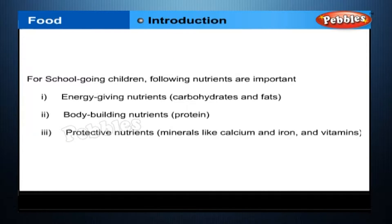For school-going children, the following nutrients are important: energy-giving nutrients — carbohydrates and fats; body-building nutrients — protein; protective nutrients — minerals like calcium and iron, and vitamins.